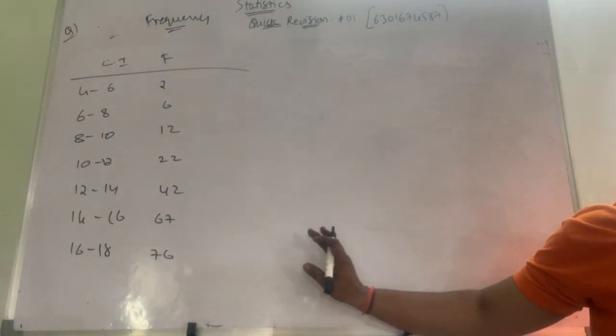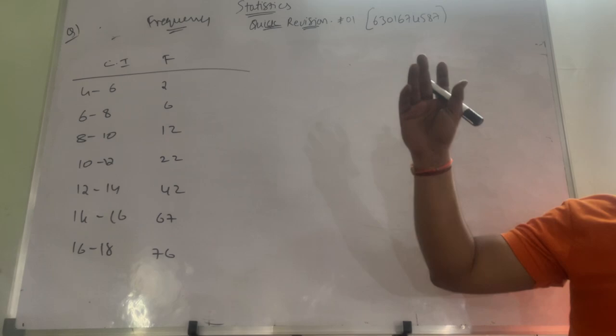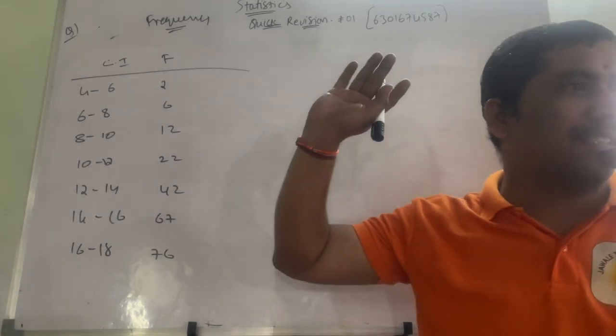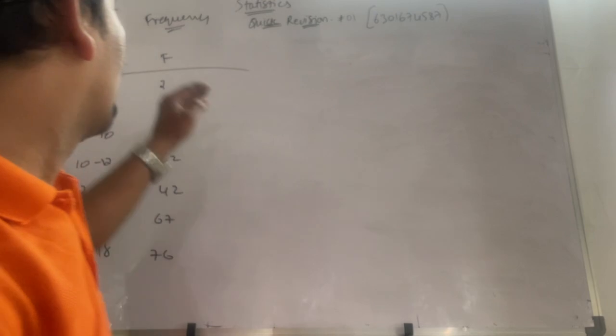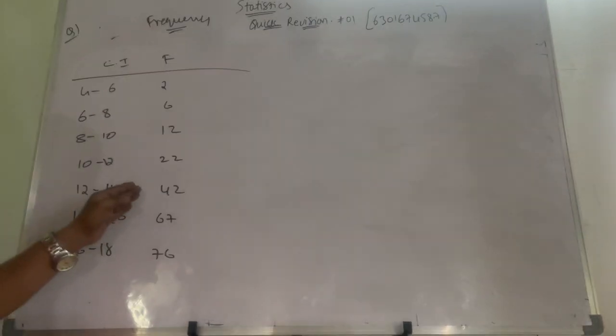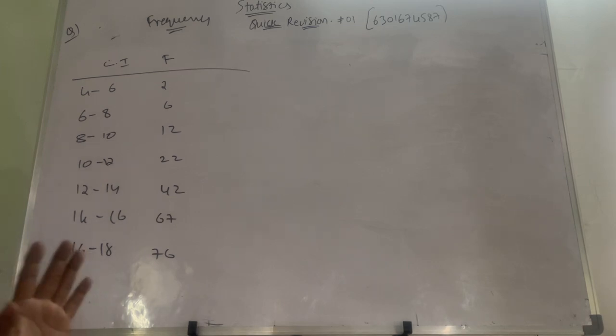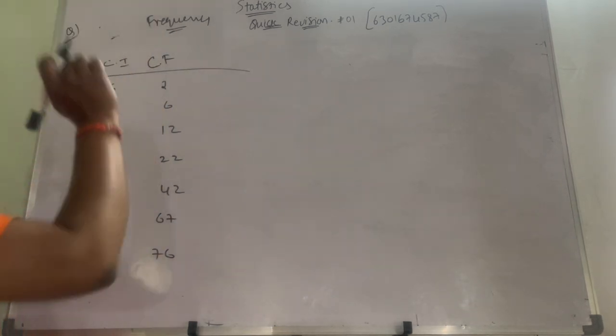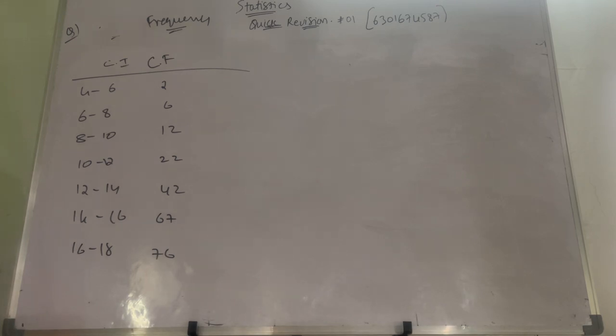But only if frequencies are like this, you do the way I say you. Generally frequencies are mixed up, you do that method only, general method. Mixed up means here 5, here 15, here 10, here 8, increasing, decreasing now, so that is general problem. So whenever frequencies are increasing, decreasing randomly, then that is general question. If frequencies are increasing continuously, it is not straightforward question. So whatever this list is given, it is not the frequency, it is cumulative frequency.